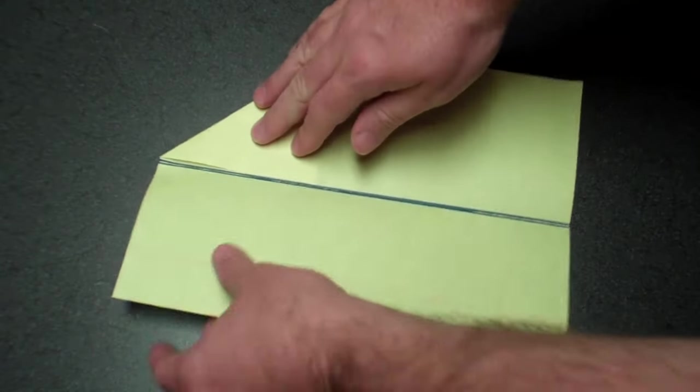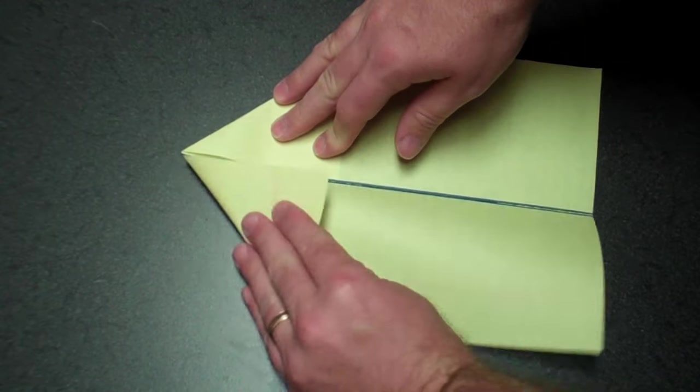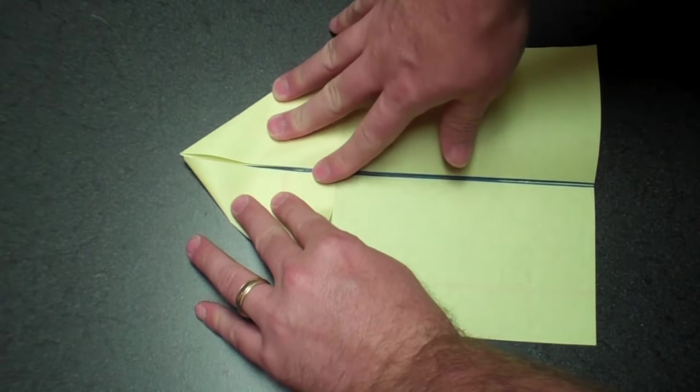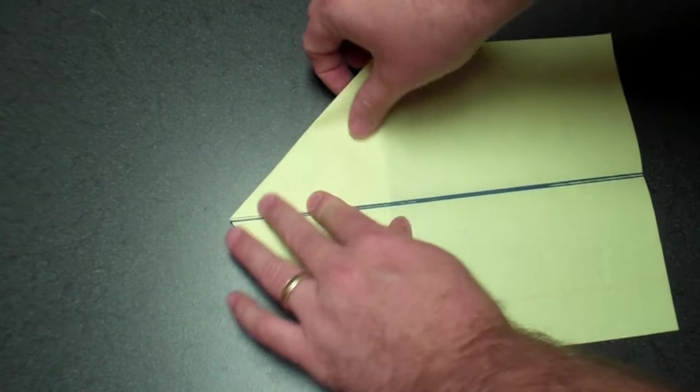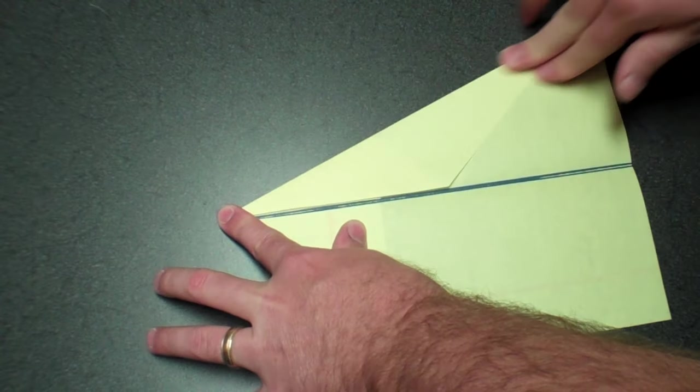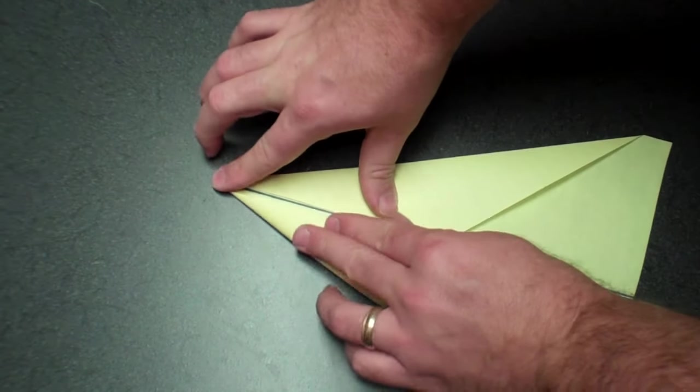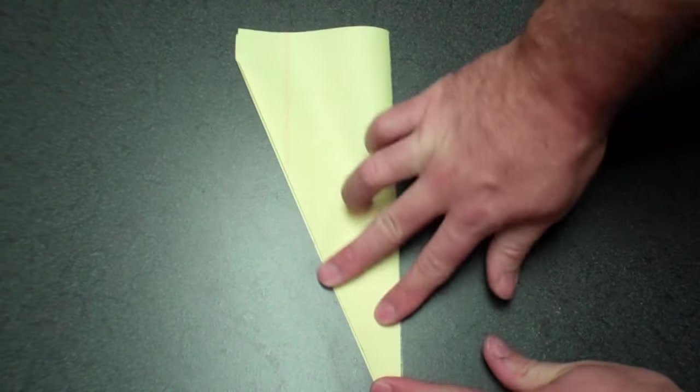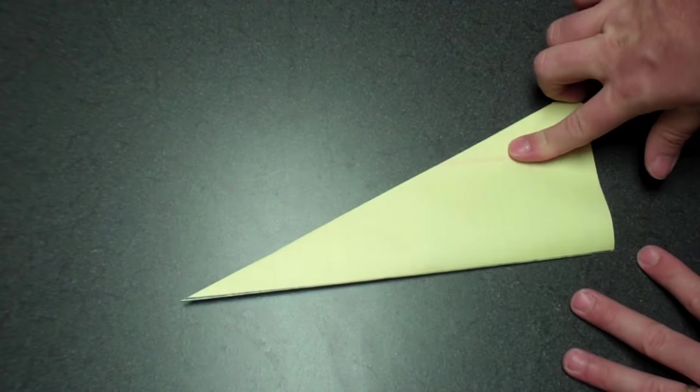And then another interior triangle fold and fold the whole thing back over. Now you're ready for wings.